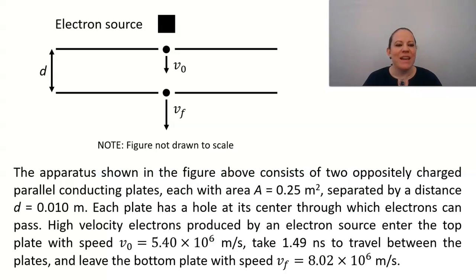The apparatus shown in the figure above consists of two oppositely charged parallel conducting plates, each with an area A equal to 0.25 square meters, separated by a distance D equal to 0.01 meters. Each plate has a hole at its center through which electrons can pass. High velocity electrons produced by an electron source enter the top plate with a speed V0 equals 5.4 times 10 to the 6 meters per second, take 1.4 nanoseconds to travel between the plates, and leave the bottom plate with a speed VF equal to 8.02 times 10 to the 6 meters per second.